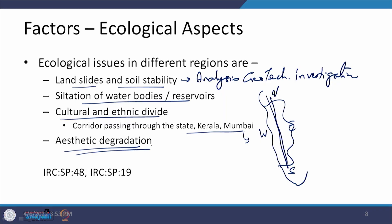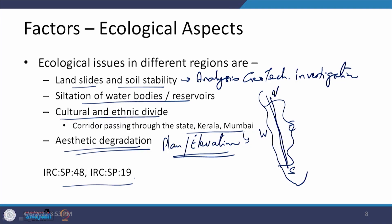Aesthetic degradation is another important thing. Whatever is being planned — how good it looks in plan or in elevation — is also important. It should give you a pleasing feeling when you look at that facility either from the top or from the sides. If you are interested in more aspects related to these, you can go through SP 48 and SP 19, which are Indian Road Congress codes, and you will get some information there.